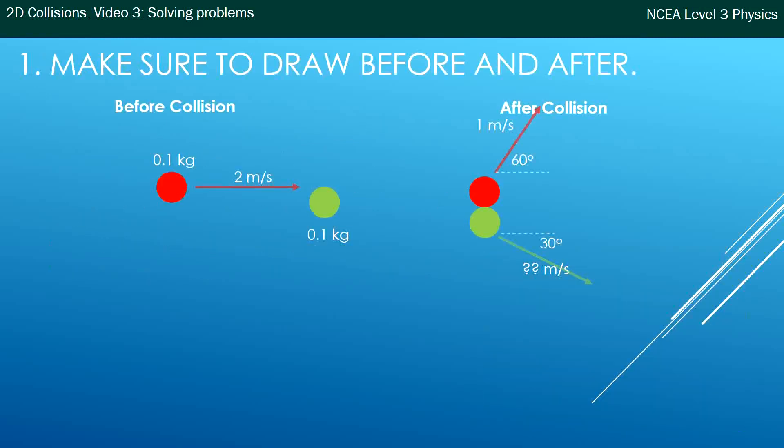So here's a situation similar to before, but I've just got different numbers on it. A red ball strikes a green ball and they fly off at different angles. My first order of business is to make sure I've got a before and afterwards, and this is clearly drawn with a before and after diagram.